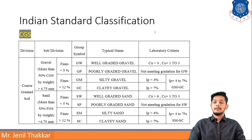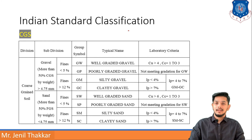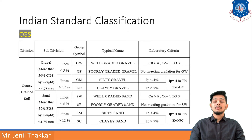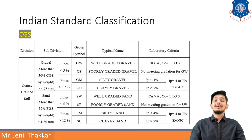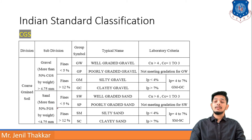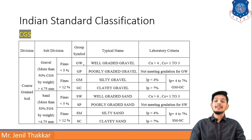For CGS, you can see a table showing different groups for coarse grained soils. If more than 50% of particles by weight are greater than 4.75 mm, they fall into 4 gravel groups. If more than 50% are less than 4.75 mm, they fall into 4 sand groups. For the gravel side, if fines are less than 5%, two groups are possible: GW (well-graded gravel) and GP (poorly graded gravel).